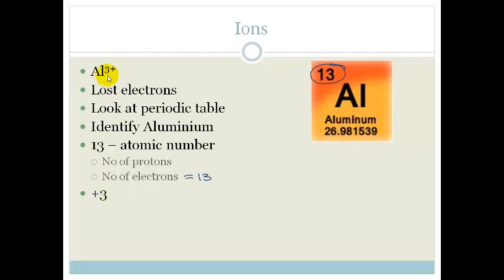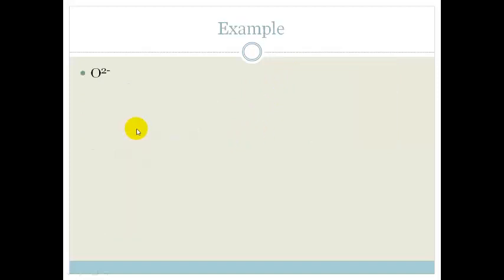That means a neutral atom has got 13 protons, but it's also got 13 electrons. But now, do you see that we have lost 3. So therefore, we've got 3 less electrons. So in this case, we have got 10 electrons on this Aluminium ion.